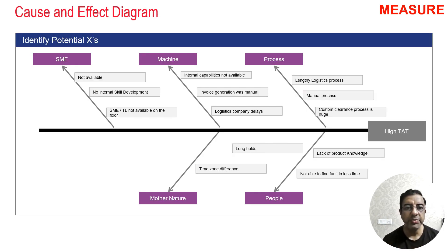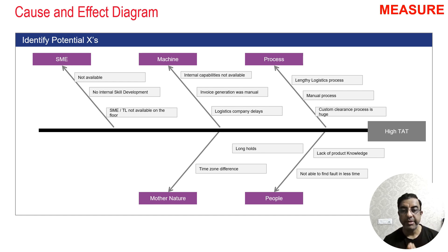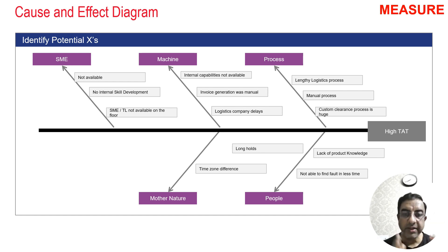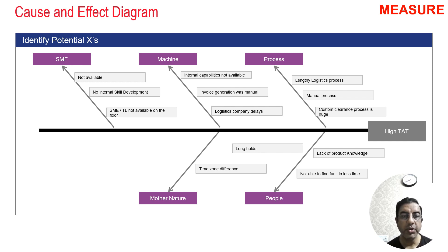The team then identified potential causes of high turnaround time through a brainstorming session. Under people, lack of product knowledge was identified. Under process, they found a lengthy logistics process, manual processes, and huge delays in customs clearance. Under machine, internal capabilities were not available and invoice generation was manual. For SMEs, subject matter experts were not available on the floor, there was no internal skill development, and team leaders were absent from the floor. Under mother nature, time zone differences caused delays of a day or two.